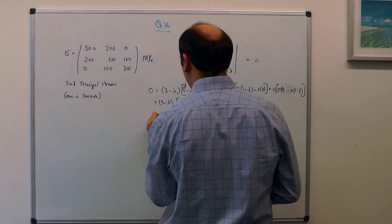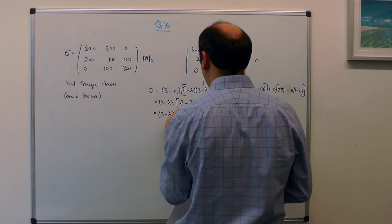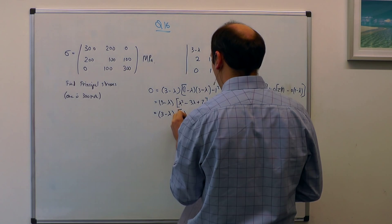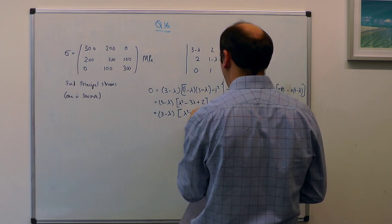So I can bring my factor of 3 minus lambda out, consolidate them together, and I have got lambda squared minus 3 lambda minus 2.